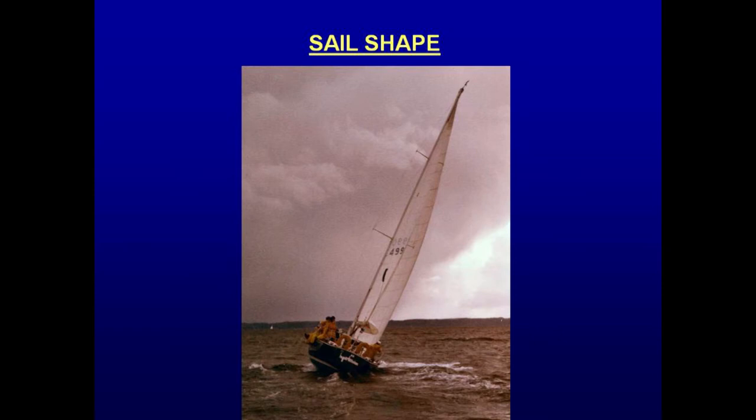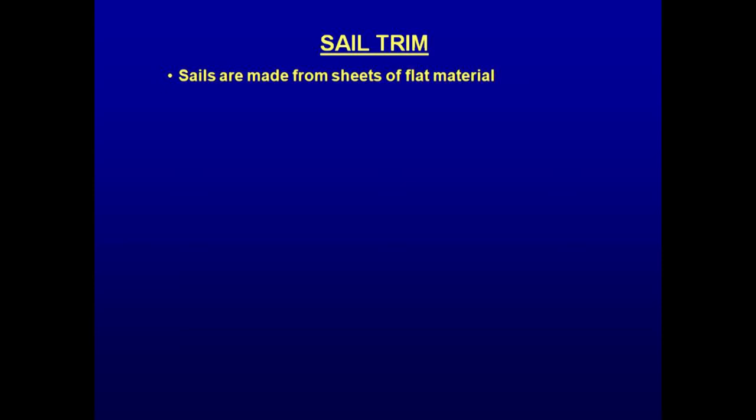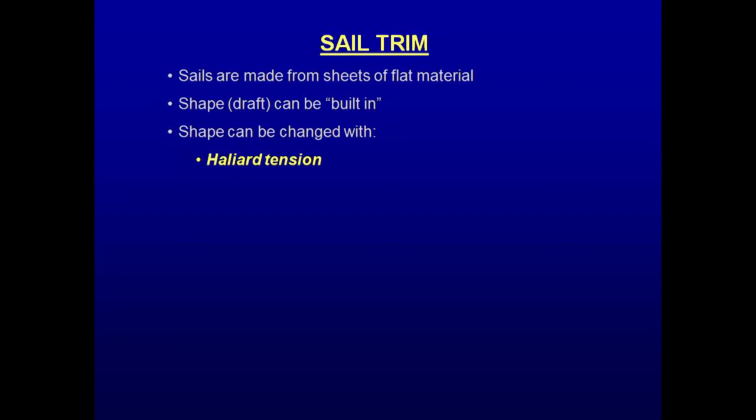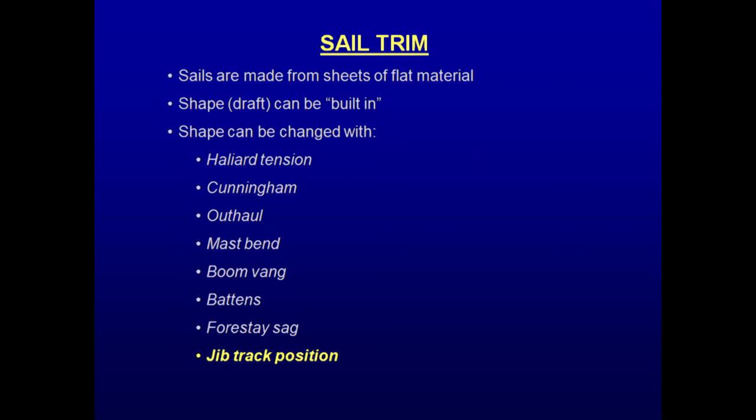Sails are made from sheets of flat material. The sail maker can cut and sew the panels of sail cloth in such a manner that the draft can be built in. The crew can change the amount and position of the draft by adjusting a number of controls, such as halyard tension, cunningham, outhaul, mast bend, boom vang, battens, fore-stay sag, jib track position, and sheet tension.